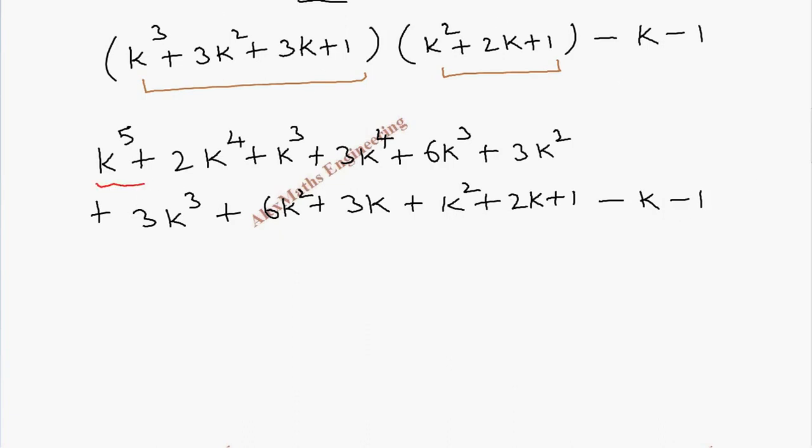So we have only one k^5 term. Then k^4 present in 2 places: 2k^4 and 3k^4. By adding this we get 5k^4. And we have to look for the next power k^3. These are the cube terms. By adding this we get totally 1 plus 6 plus 3, so it is 10. We can say it is plus 10k^3.